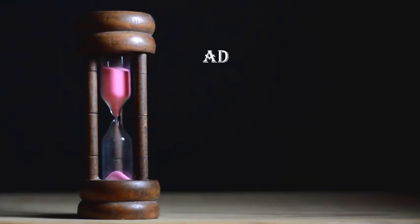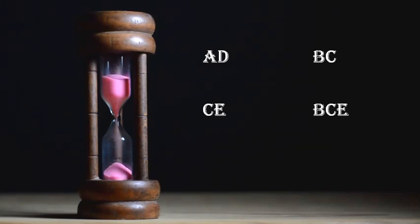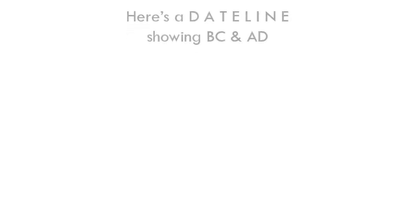Hello and welcome to another video in Social Science. Today we are looking at what the terms AD, BC, CE and BCE mean. So first let's understand why these labels exist.